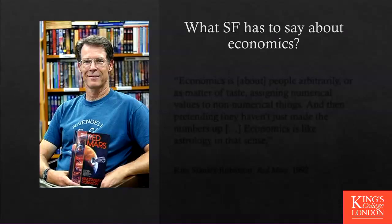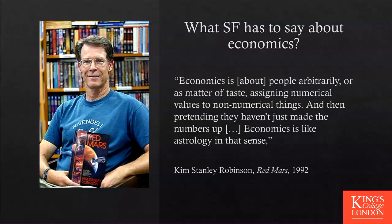This quote is from Kim Stanley Robinson, the author of many fantastic books. He's probably the science fiction writer who thinks most like an economist — take that as a good thing or a bad thing. He's also a student of Fredric Jameson, which is an important aspect of his work. He says the following about economics in Red Mars: 'Economics is about people arbitrarily, or as a matter of taste, assuming numerical values to non-numerical things and then pretending they haven't just made up the numbers. So economics in that sense is like astrology.'